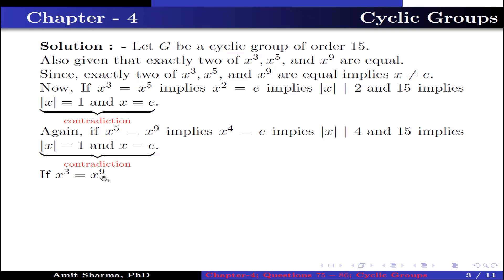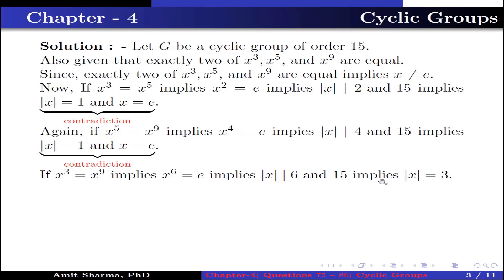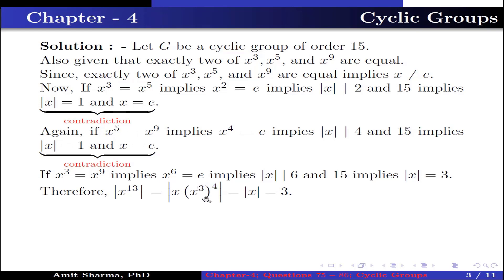If X³ = X⁹, then X⁶ = identity. This implies the order of X divides both 6 and 15, which further implies the order of X is 3. Therefore, the order of X¹³ equals the order of X · (X³)⁴. Since X³ = identity, this equals the order of X, which is 3. Hence, the order of X¹³ is 3.